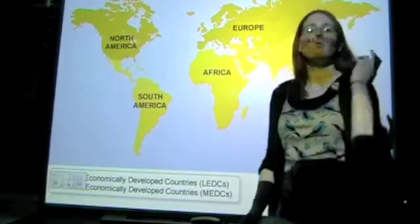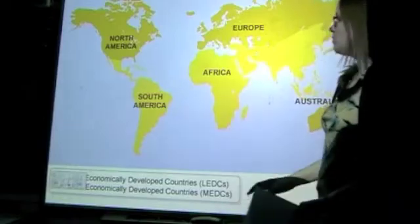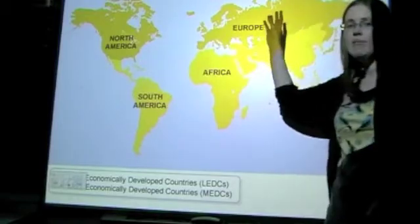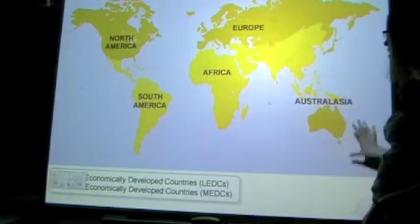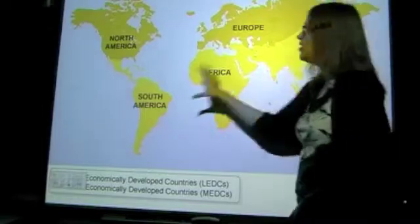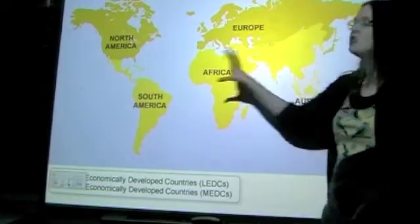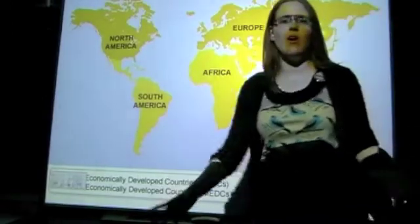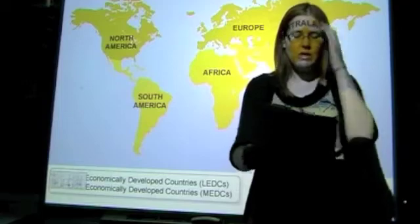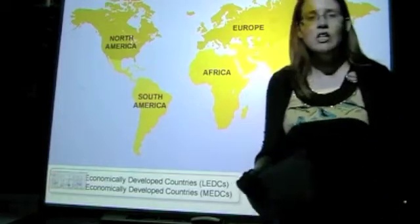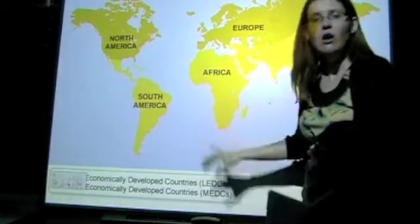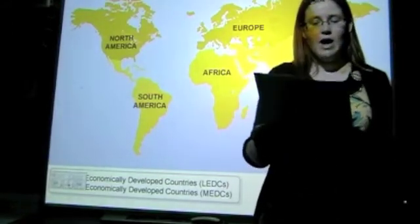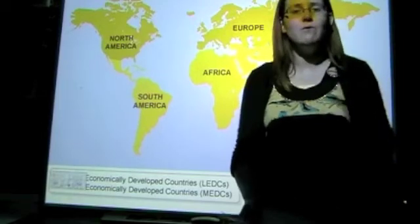On a global level, we have a pattern emerging. We have our more economically developed countries mainly in the Northern Hemisphere. Our exception is Australia and New Zealand, and our less economically developed countries, which are in the Southern Hemisphere — South America, Africa, Asia. However, this pattern is far too simplistic, and what we need to recognise is that within regions, for example within Africa, but also within countries, it's a lot more diverse, and we have a disparity or a great difference emerging.